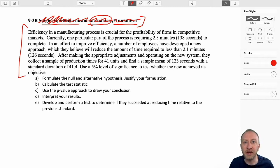Efficiency in a manufacturing process is crucial for the profitability of firms in competitive markets. Currently, one part of the process is requiring 2.3 minutes or 138 seconds to complete. In an effort to improve efficiency, a number of employees have developed a new approach which they believe will reduce the amount of time required to less than 2.1 minutes or 126 seconds.